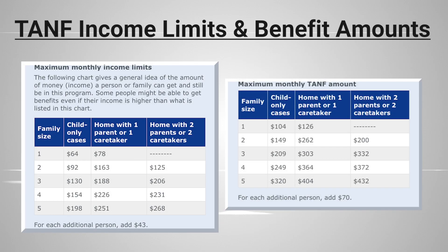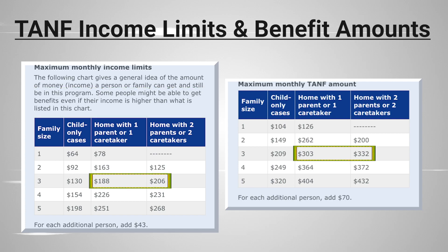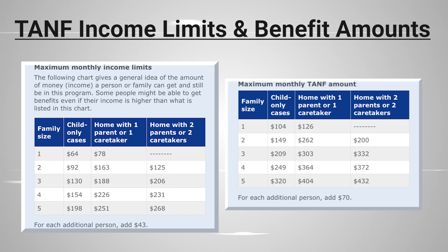Now let's look at the income guidelines and the maximum monthly amount for TANF. You'll notice the maximum income limits are very low. However, some people may be able to get benefits even if their income is higher than the listed amounts. As an example, you can see that the amount changes in a family of three depending upon the number of parents or caretakers in the home at the time.